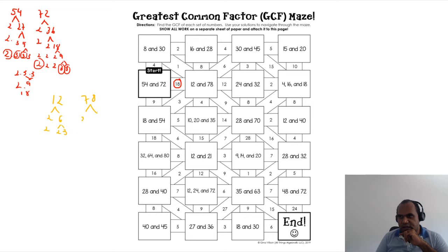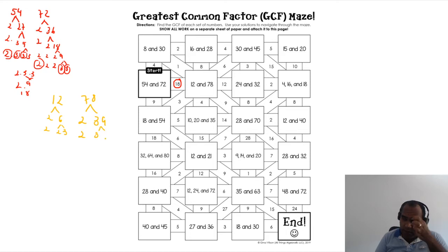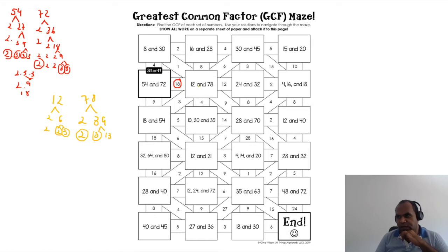Now 78: I can break it down into two and 39. Does 39 divide by three? Yes — three times 13 equals 39. And 13 is prime, I can't break it down further. The common factors are two and three. Two times three equals six, so the GCF of 12 and 78 is 6.